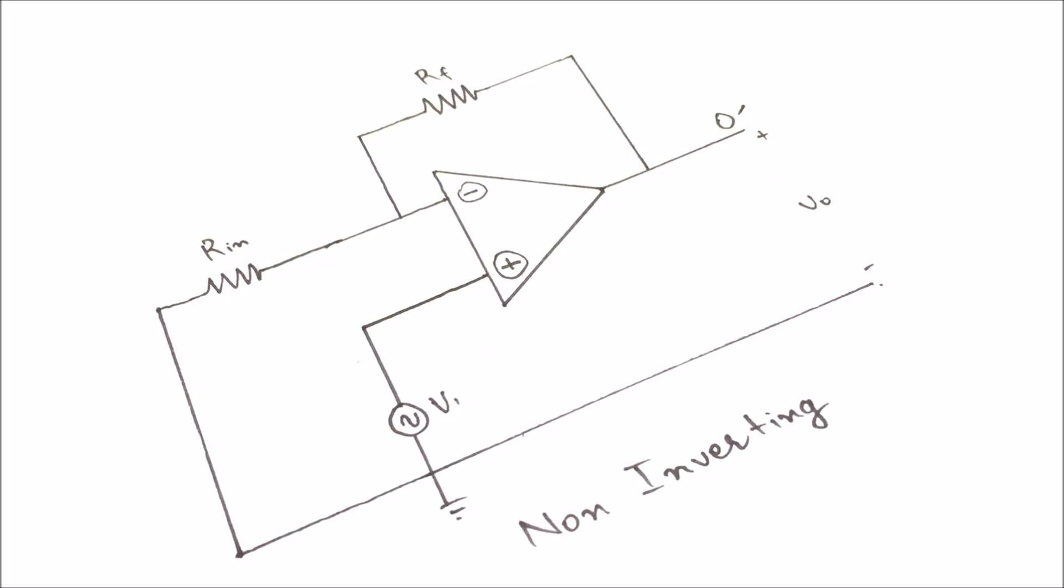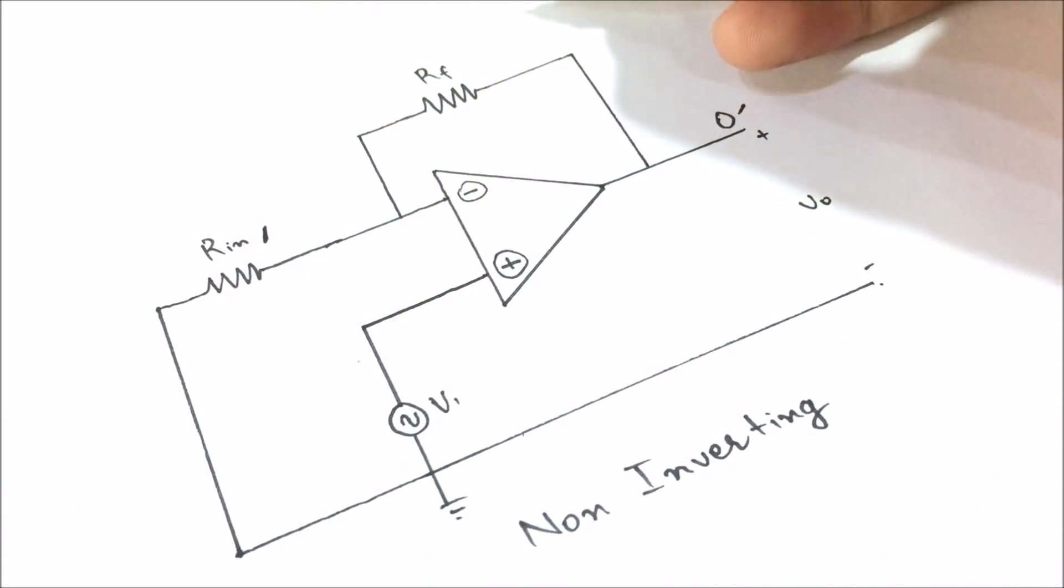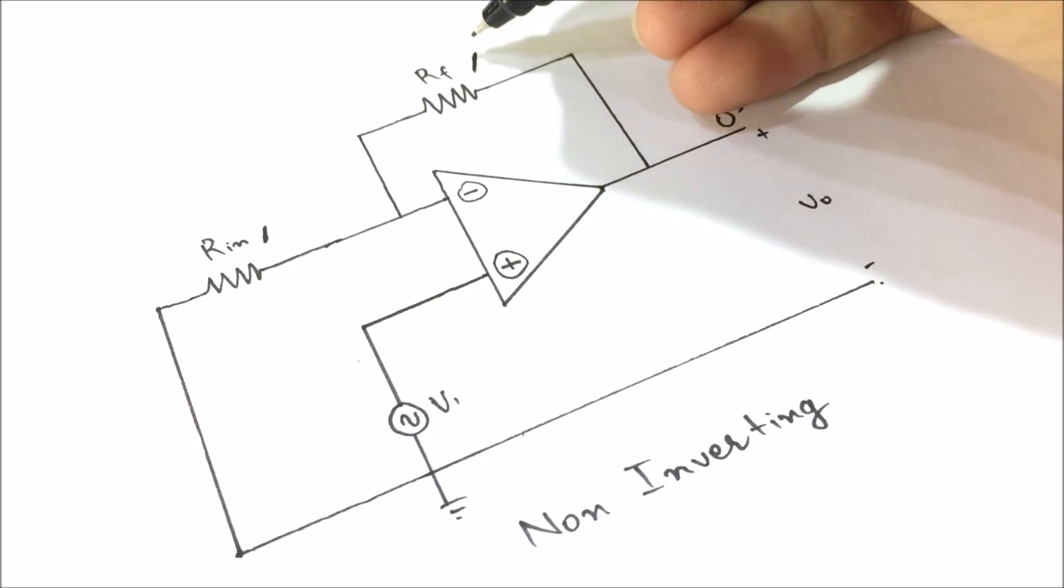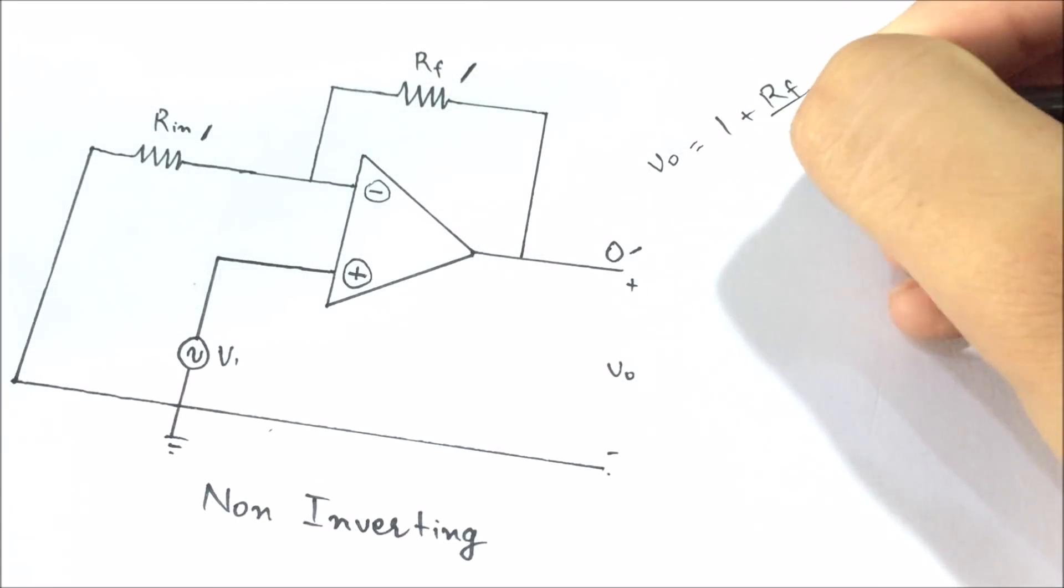If I want to make a non-inverting amplifier according to this schematic, you can see that there are two resistors, one for the inverted input and one for the feedback. The function of these two resistors is to set the gain of the amplifier according to this formula, which is only valid for non-inverted configuration.